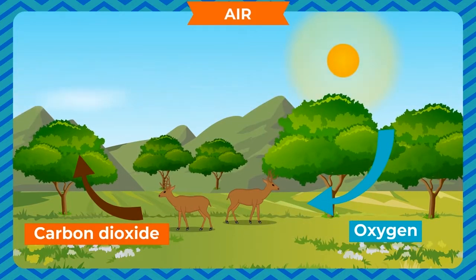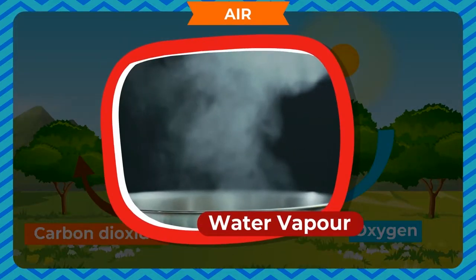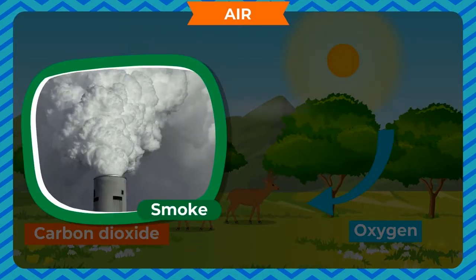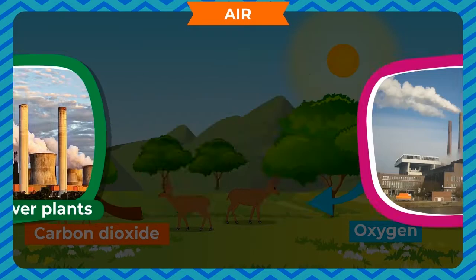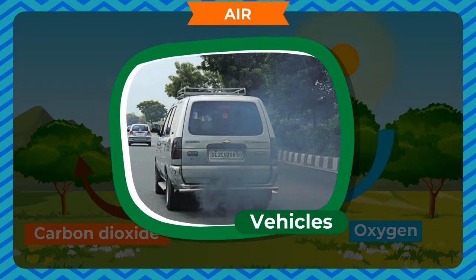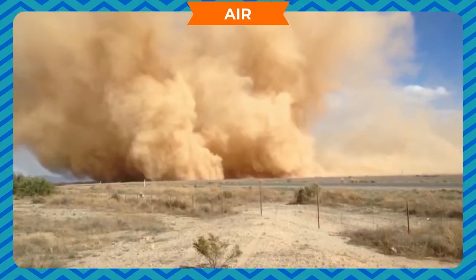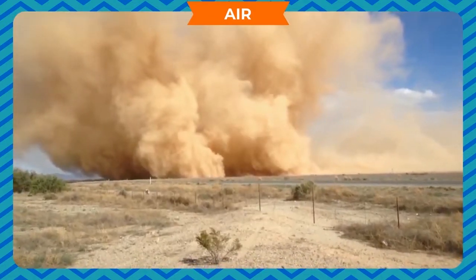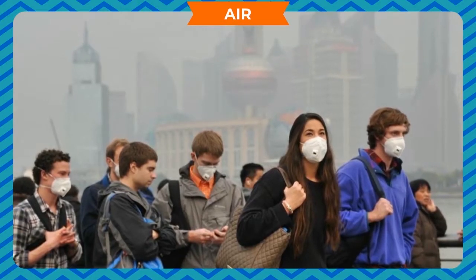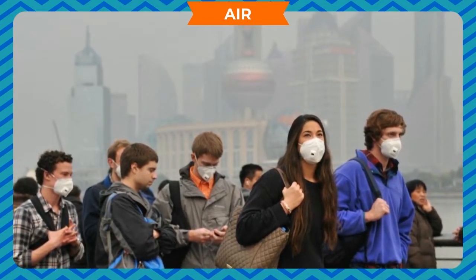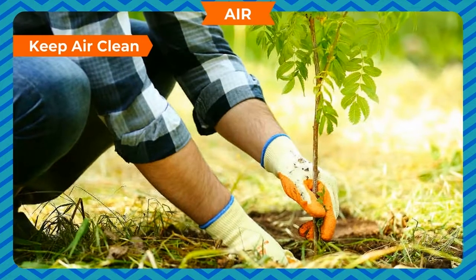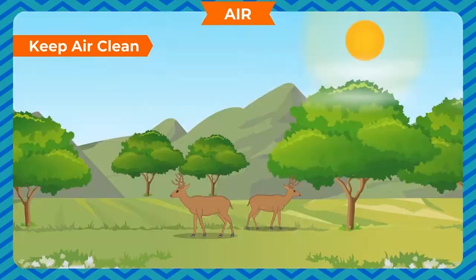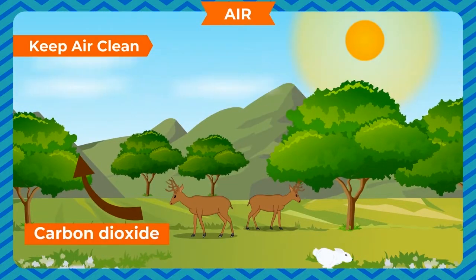Apart from gases, air also contains water vapor, smoke, dust and germs. Power plants, factories and vehicles release smoke and harmful gases that pollute the air. Dust and harmful chemicals also pollute the air. If we breathe in polluted air, it may cause many respiratory diseases.